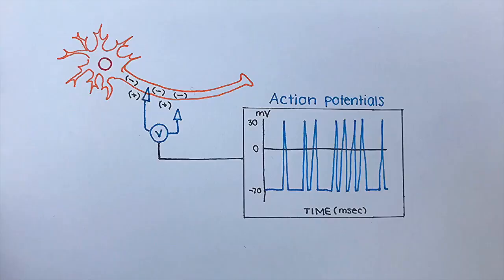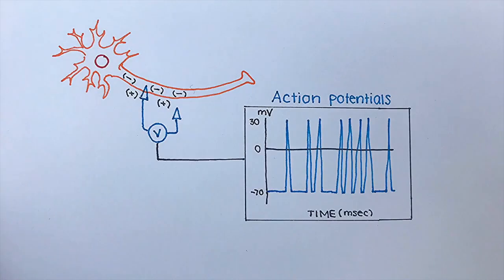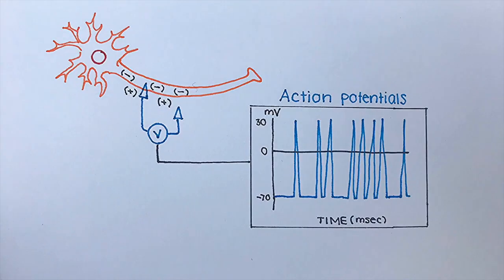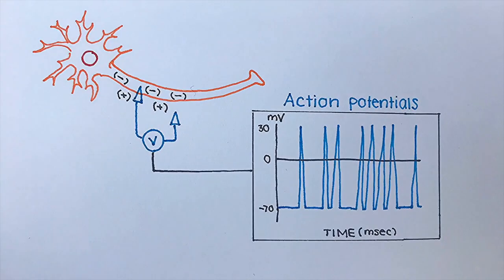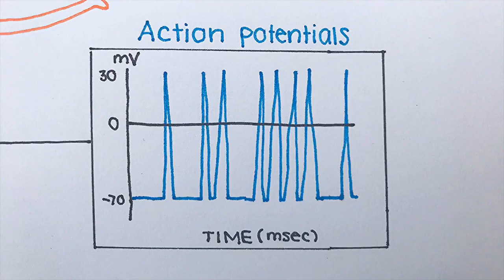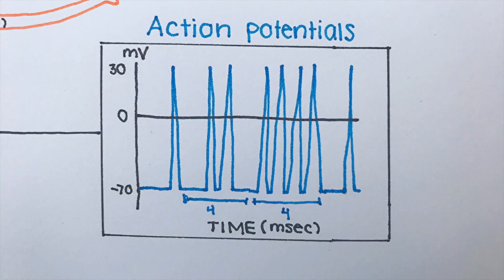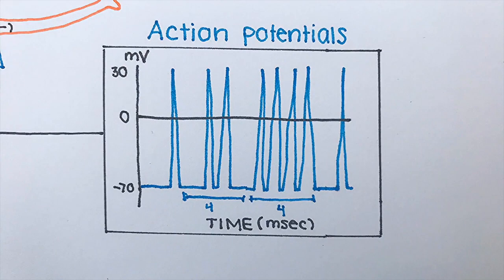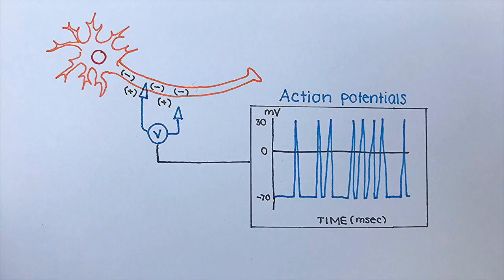Therefore, neurons can be approximated as binary, so long as you look at them within the correct timescale. If you look at the voltage of a neuron over two to four milliseconds, it's possible to approximate the voltage pattern in time as a stream of ones and zeros.